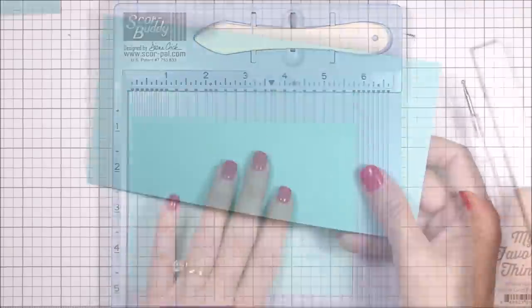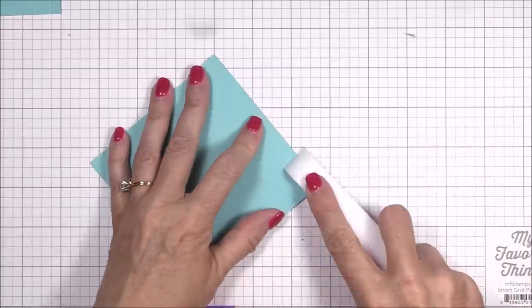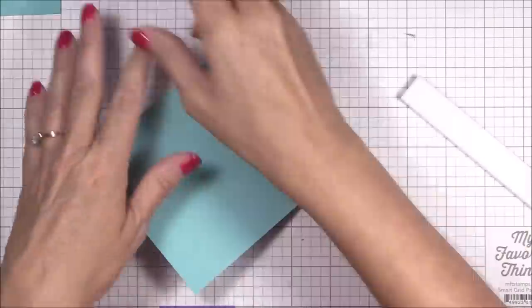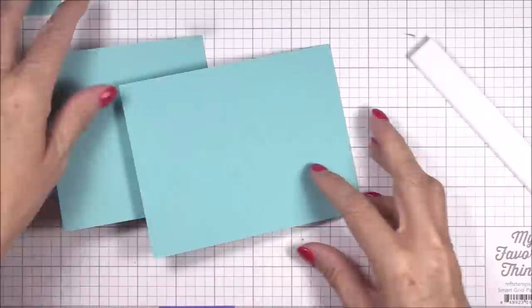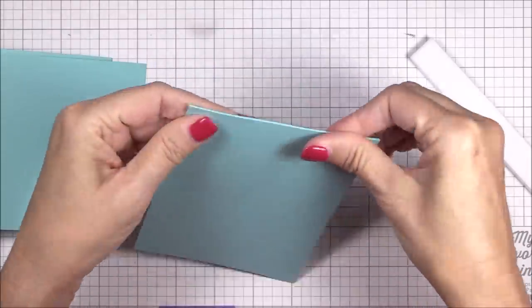Next, you'll want to fold all the panels on their score lines and perfect the creases with a Teflon bone folder. This will help cut down on the bulk of the card and ensure that everything aligns properly. So if you can, try not to avoid this step.